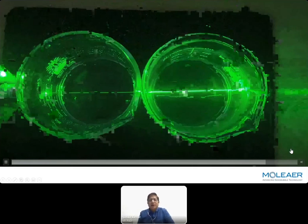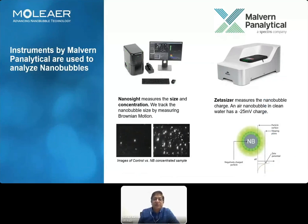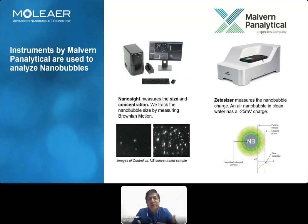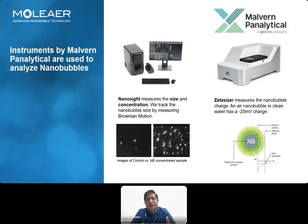For the quantitative method, Malvern has instruments that are de facto standard equipment for working with nanobubbles. The NanoSight equipment tells you the size of the nanobubbles and the number — the density — in millions of bubbles per milliliter. Images at the bottom show a control like DI or tap water versus water containing nanobubbles. The Zetasizer is another very useful instrument to measure the zeta potential, which is a very basic characteristic of nanobubbles. These two instruments are the standard in the industry.